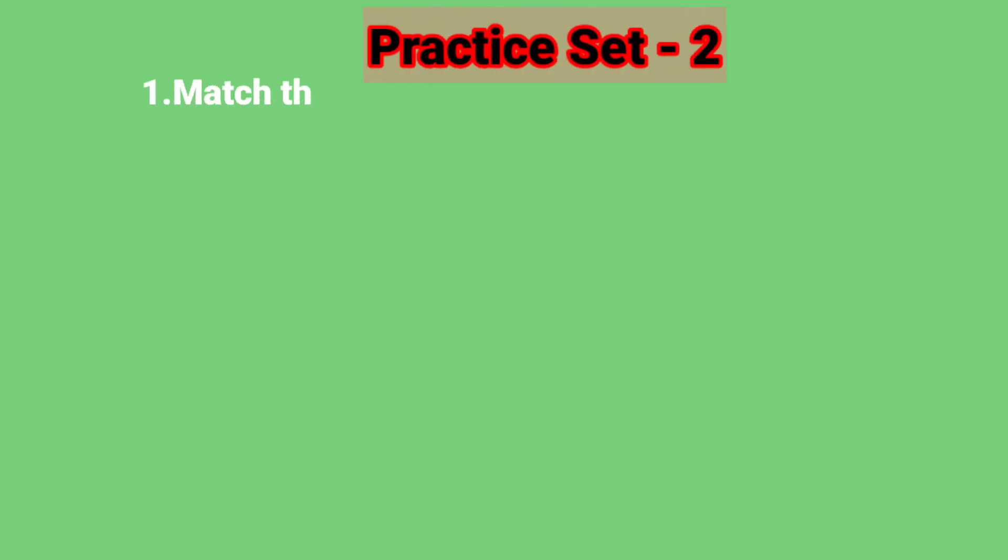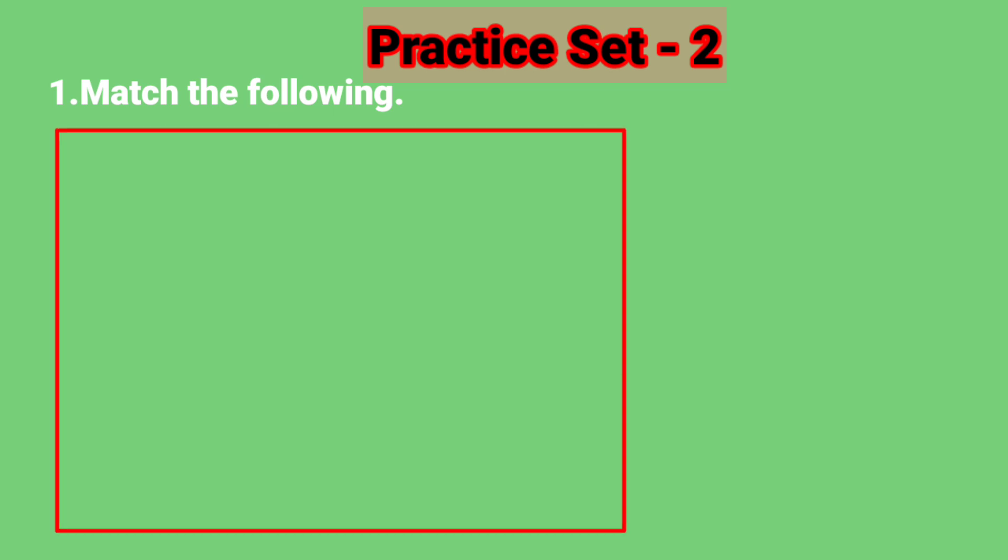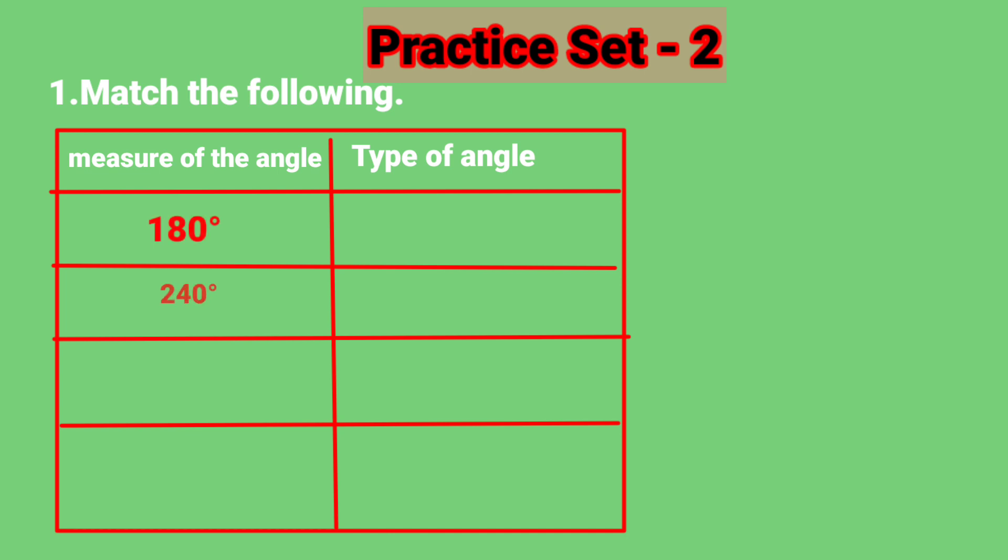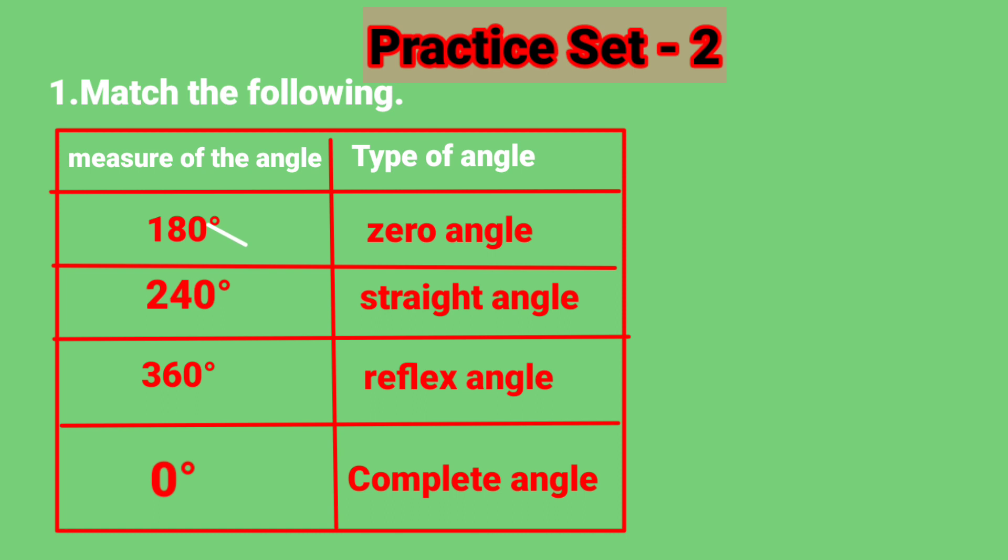Practice Set 2. Match the following. Measure of angle, type of angle. 180 degrees, 240 degrees, 360 degrees, 0 degrees. Zero angle, straight angle, reflex angle, complete angle. We have to match: 180 degrees with straight angle, 240 degrees with reflex angle, 360 degrees with complete angle, and 0 degrees with zero angle.